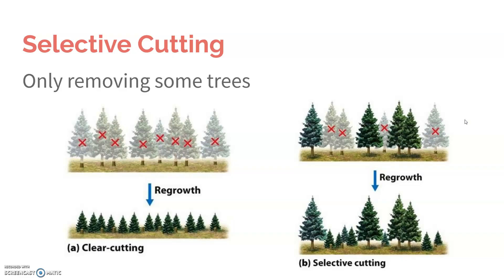We begin with selective cutting. Selective cutting is an alternative to clear cutting. Clear cutting is the complete removal of trees, whereas selective cutting is only a few trees — those might be the oldest trees that have grown the most and can produce the most wood.